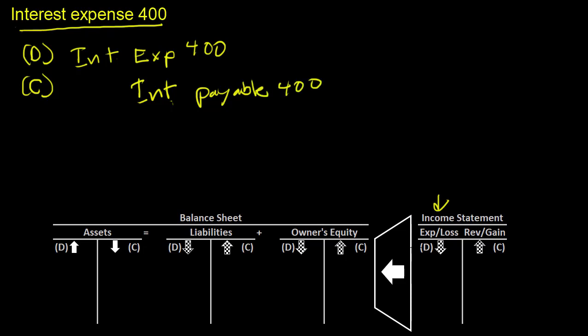And that interest payable - again, your expense is still on the income statement. So you'd have interest expense of $400 reducing there, just like it was before.